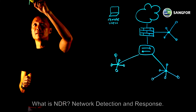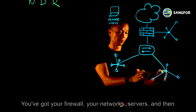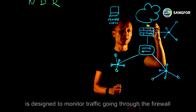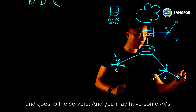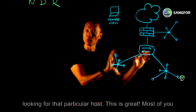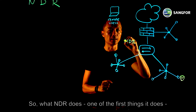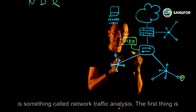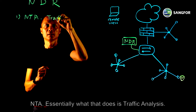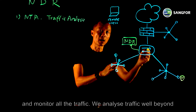What is NDR — Network Detection and Response? If we look at a traditional environment, you've got your firewall, your networks, servers, internal users, and remote users. Typically a firewall is designed to monitor traffic that goes through the firewall to the servers. You may have certain AVs deployed on your workstations or servers. This is great, but that's not enough. So what NDR does — one of the first things — is something called Network Traffic Analysis, or NTA. Essentially, we sit right next to one of your core switches and monitor all the traffic.